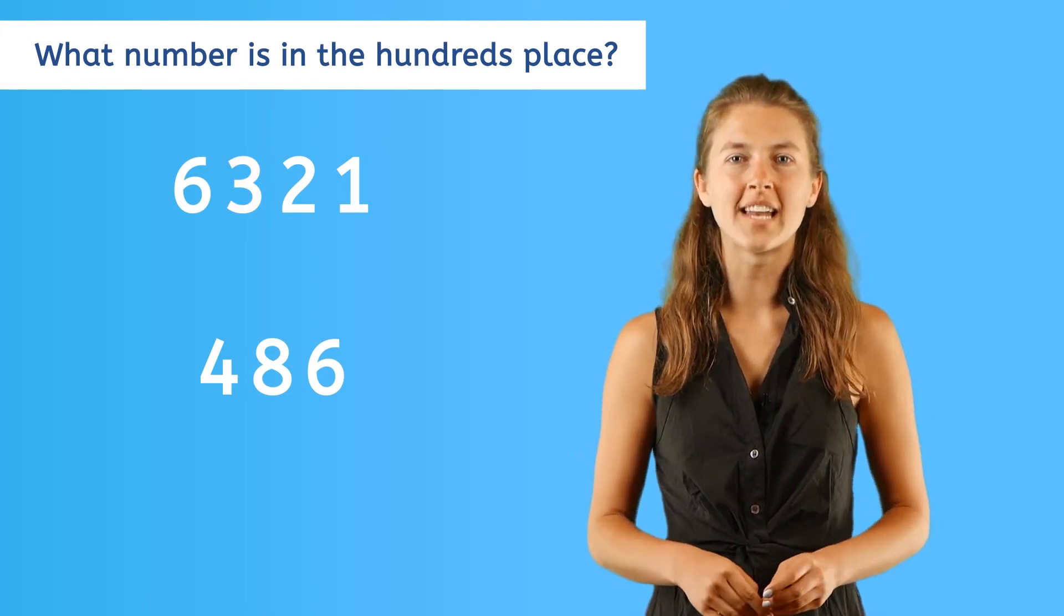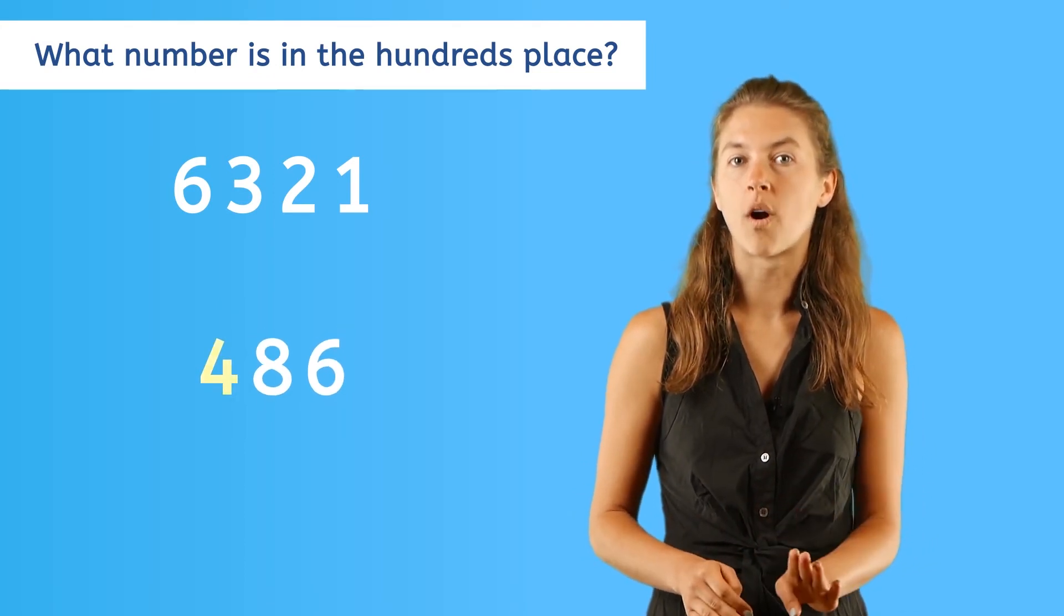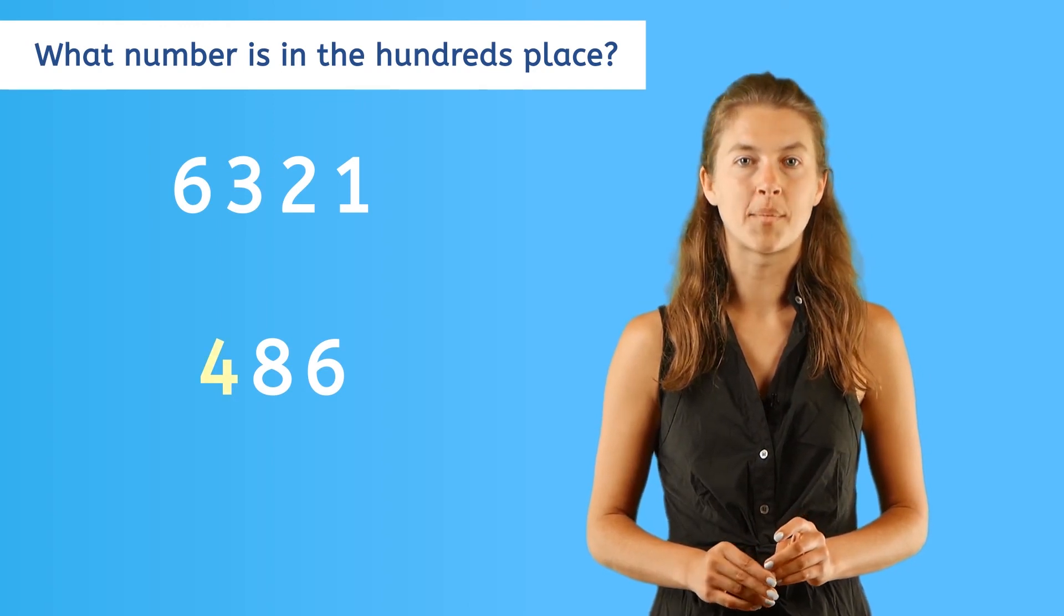Now let's do the same for the next number. In 486, the digit in the hundreds place is 4, so we say there are four hundreds in this number.